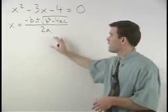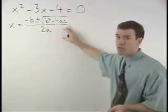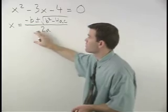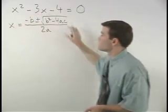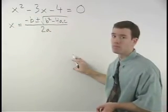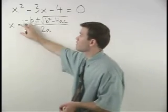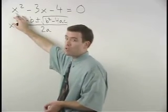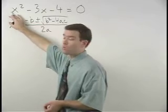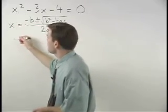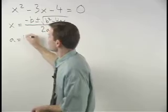The values for a, b, and c in the formula come from the coefficients on our three terms in the trinomial. The value for a comes from the coefficient on the x squared term, which in this case is 1, so we say that a equals 1.